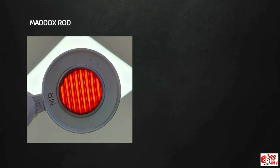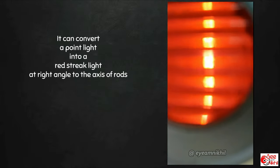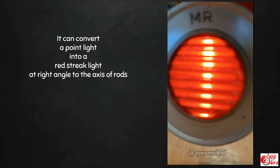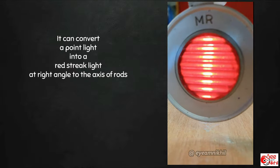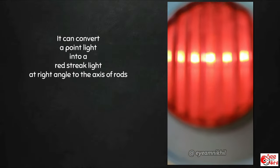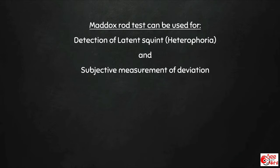The next lens is a Maddox rod. It consists of multiple cylinders placed side by side with their axes parallel to each other. This arrangement converts a point source of light into a linear streak, which is perpendicular to the axis of the cylinder. So when the axis of the cylinder is horizontal, the streak is vertical, and when the axis is made vertical, the streak becomes horizontal. The Maddox rod test can be used for detection of latent squint — heterophoria — and for subjective measurement of deviation, performed at 6 meters for distance and 33 cm for near.